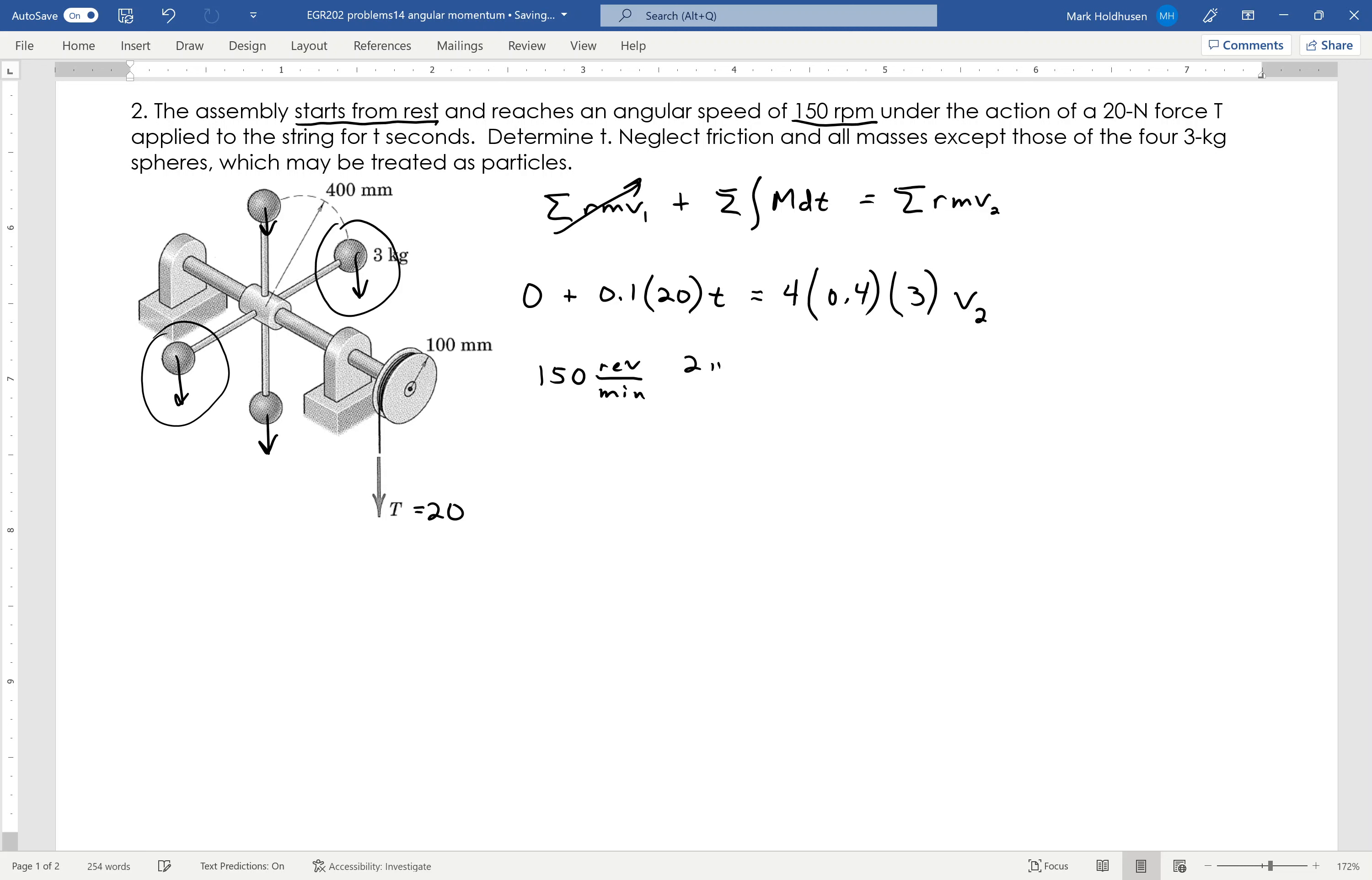And I can take that times 2 pi radians per revolution, get rid of that. And then I can take that 1 minute divided by 60 seconds, kill that.